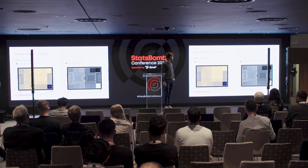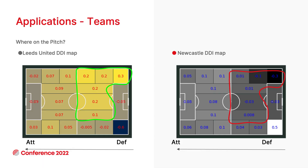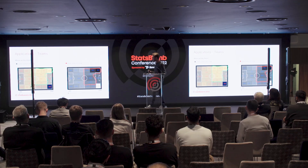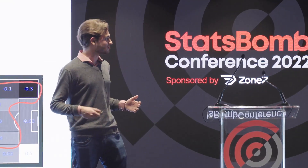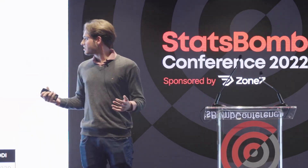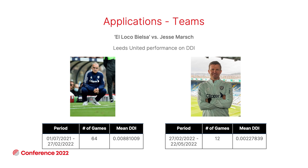Another application is on-pitch performance: where does our team perform well? We can see Leeds United at the top of the table and Newcastle United at the bottom. In the green area for Leeds United, they raised their probability of getting the ball back by almost 20%, while Newcastle United raised it by only 1%. And since we're talking about Leeds United, looking at their managers, El Loco Bielsa's value is four times better than under Josh Marsch — reflecting his well-known philosophy of having the ball back.